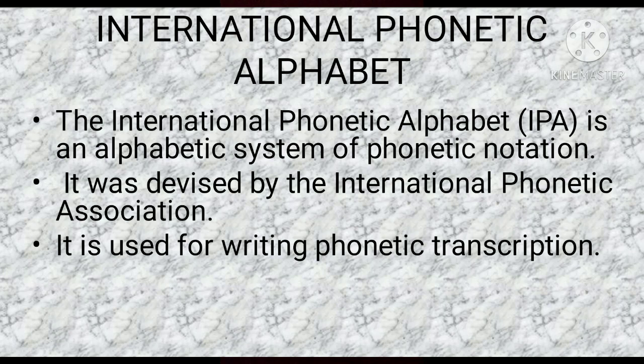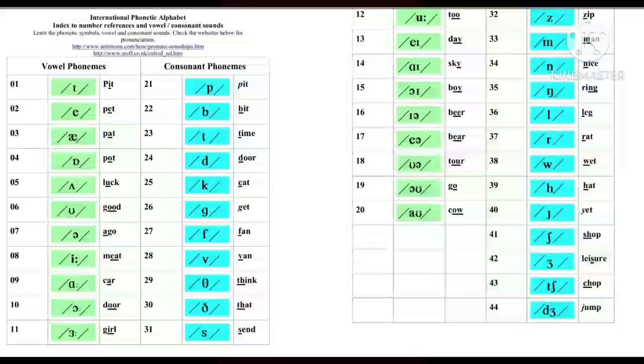We have 44 different phonemes. In this chart, I am showing 44 phonetic alphabets, or International Phonetic Alphabet, that is 44 in number. We have vowel phonemes and also consonant phonemes. In vowel phonemes, you can see long vowels as well as short vowels and also diphthongs. And in the case of consonant phonemes, you can see 24 consonant phonemes.